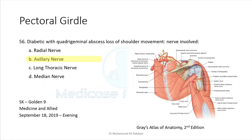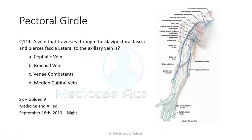The upper triangular space contains the circumflex scapular artery. The lower triangular space contains the profunda brachii artery and radial nerve. A vein that traverses through the clavipectoral fascia and pierces it laterally to drain into the axillary vein — that is the cephalic vein.